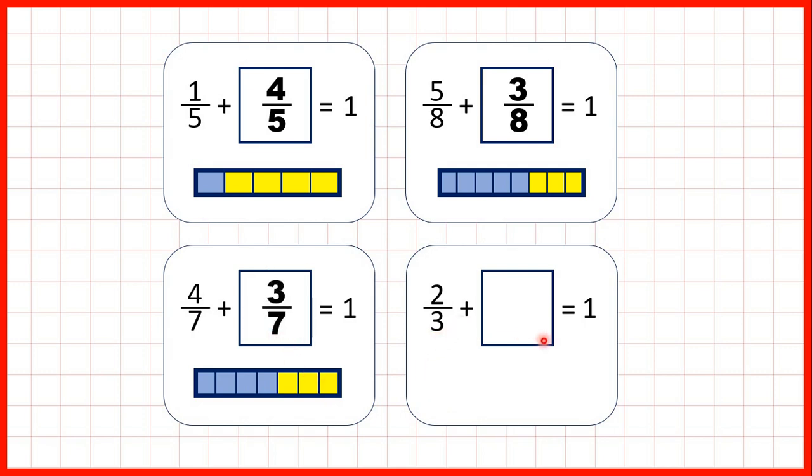2/3 plus what is 1? Well if we show 2/3 we need to color in 1 more third to make 1 whole colored in. And again notice 4/7 plus 3/7 is 7/7 and 2/3 plus 1/3 is 3/3. If you have a fraction where the numerator and denominator are the same you always have 1 whole.